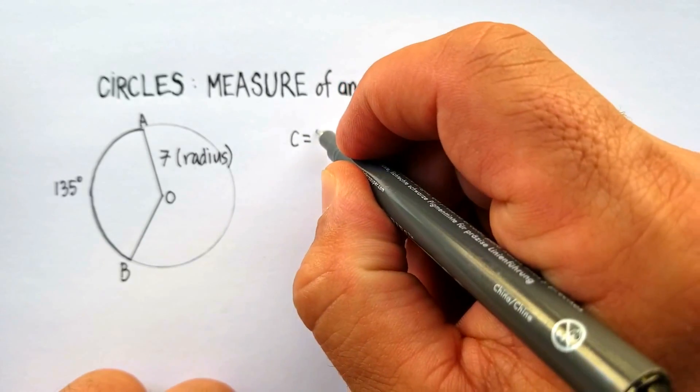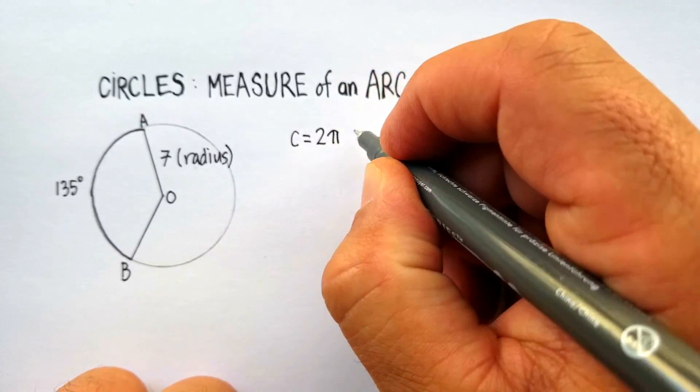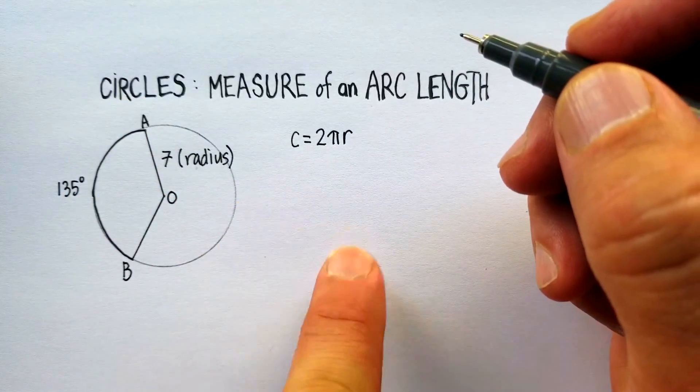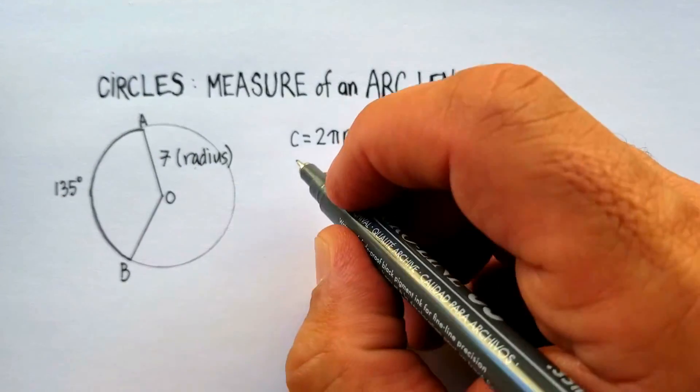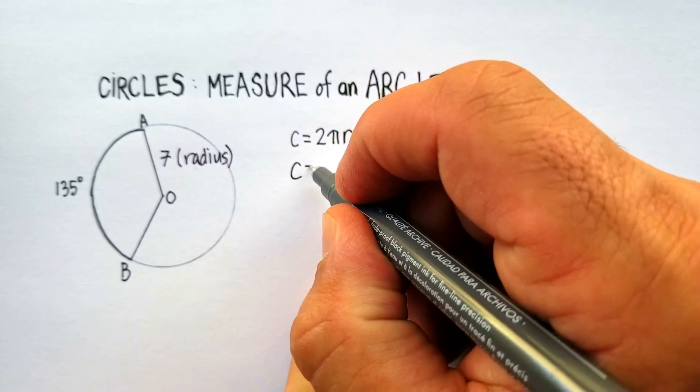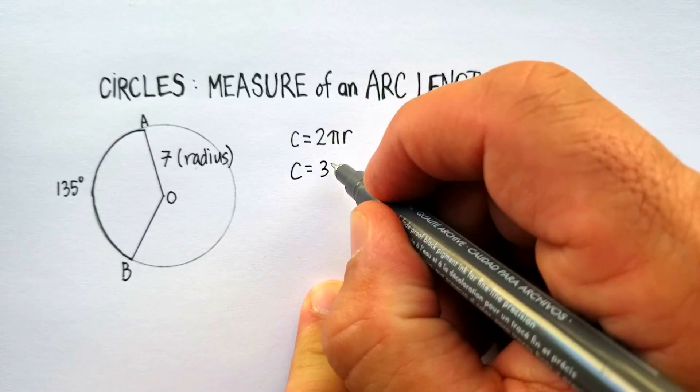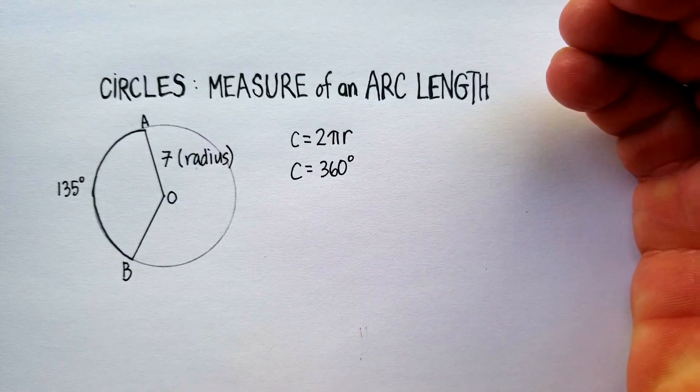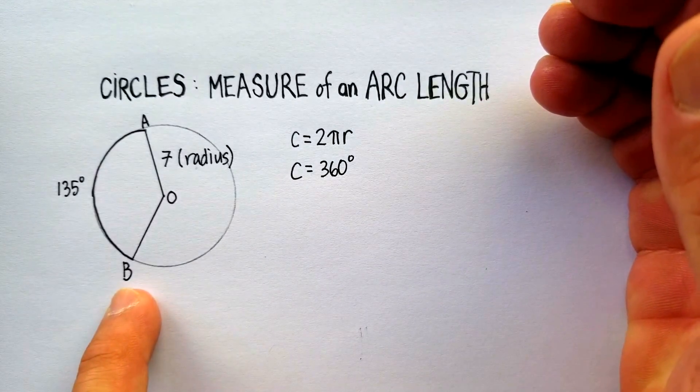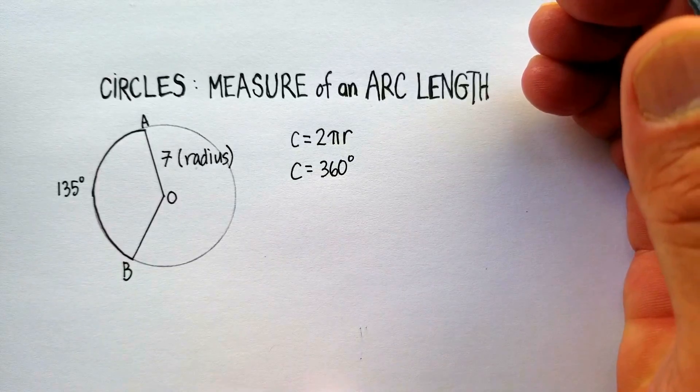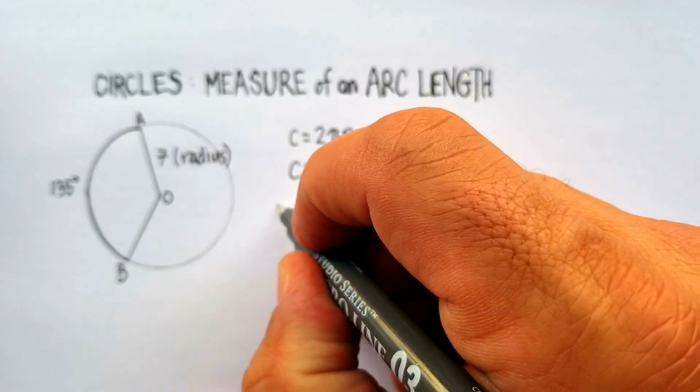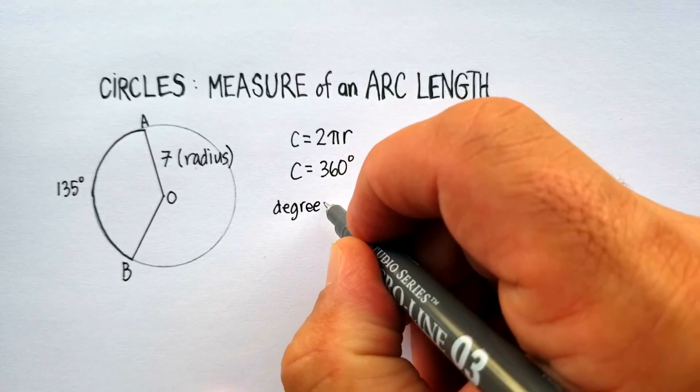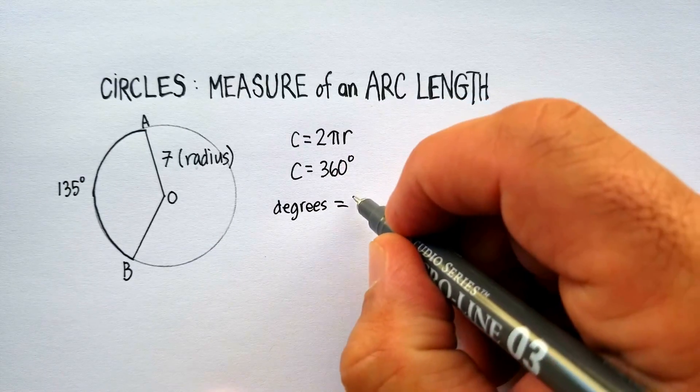And that will give us the distance around a circle. We also know that a circle, in terms of degrees, is 360 degrees all the way around. So what we can probably do here is compare the proportions between the degrees and the lengths and the length of the circumference.